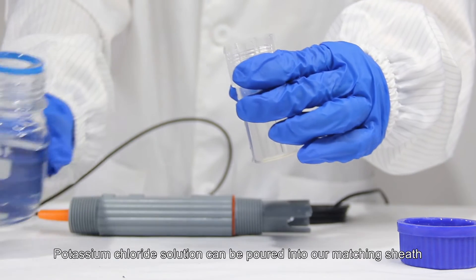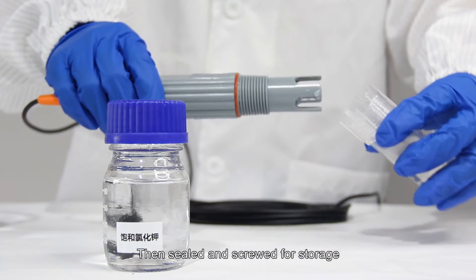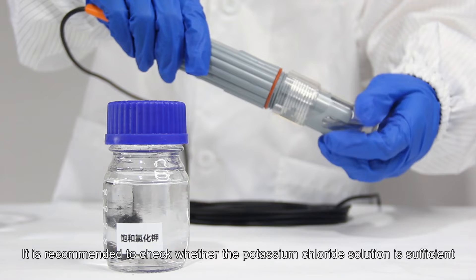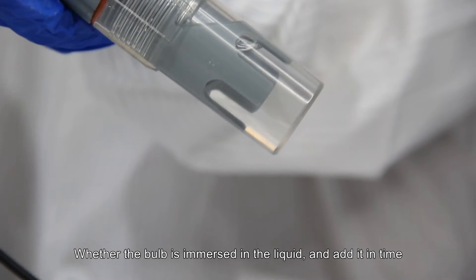Potassium chloride solution can be poured into our matching sheath, then sealed and screwed for storage. It is recommended to check whether the potassium chloride solution is sufficient and whether the bulb is immersed in the liquid.